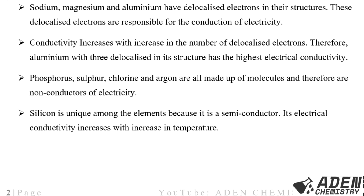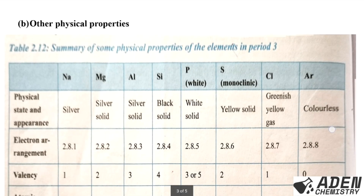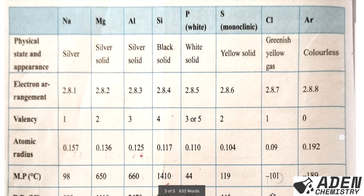If there are no localized electrons, there is no electrical conductivity, so those elements are non-conductors. Silicon is unique among the elements because it is a semiconductor — its electrical conductivity increases with increase in temperature. At low temperature it is a poor conductor; at high temperature it becomes a good conductor of heat and electricity.